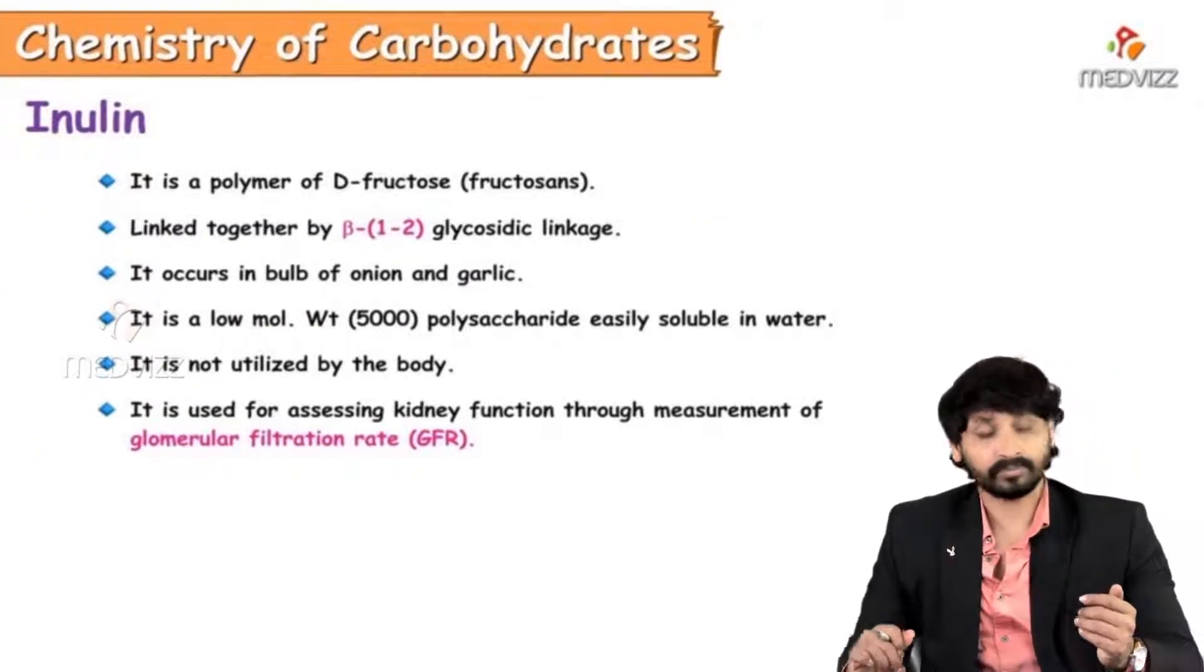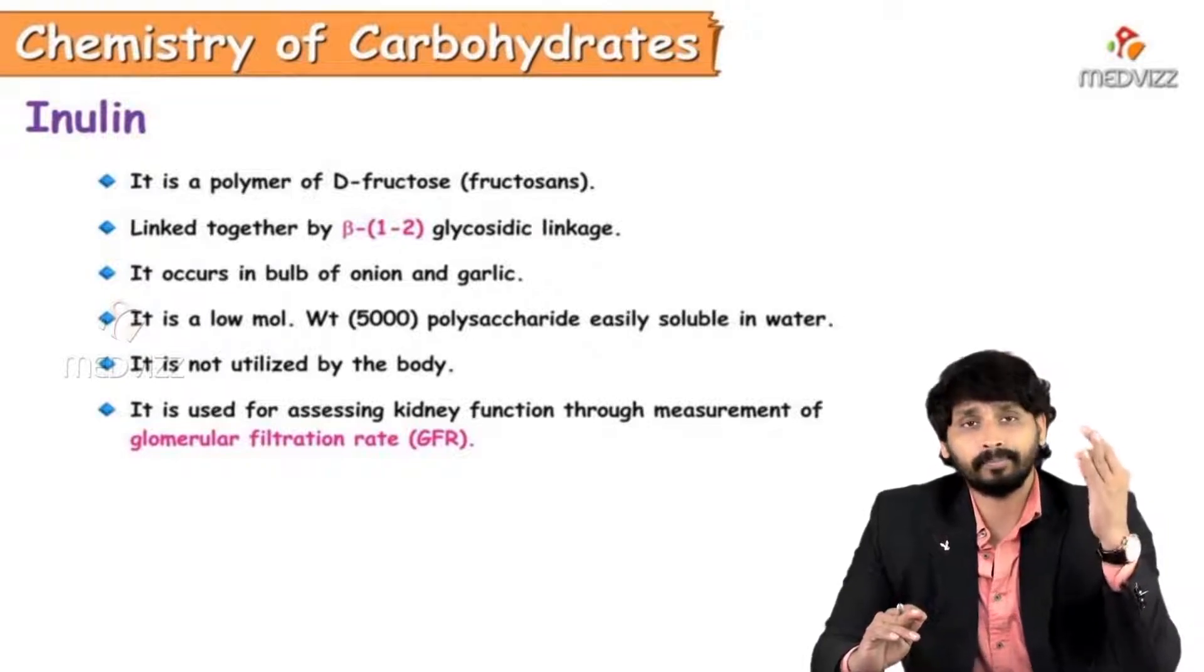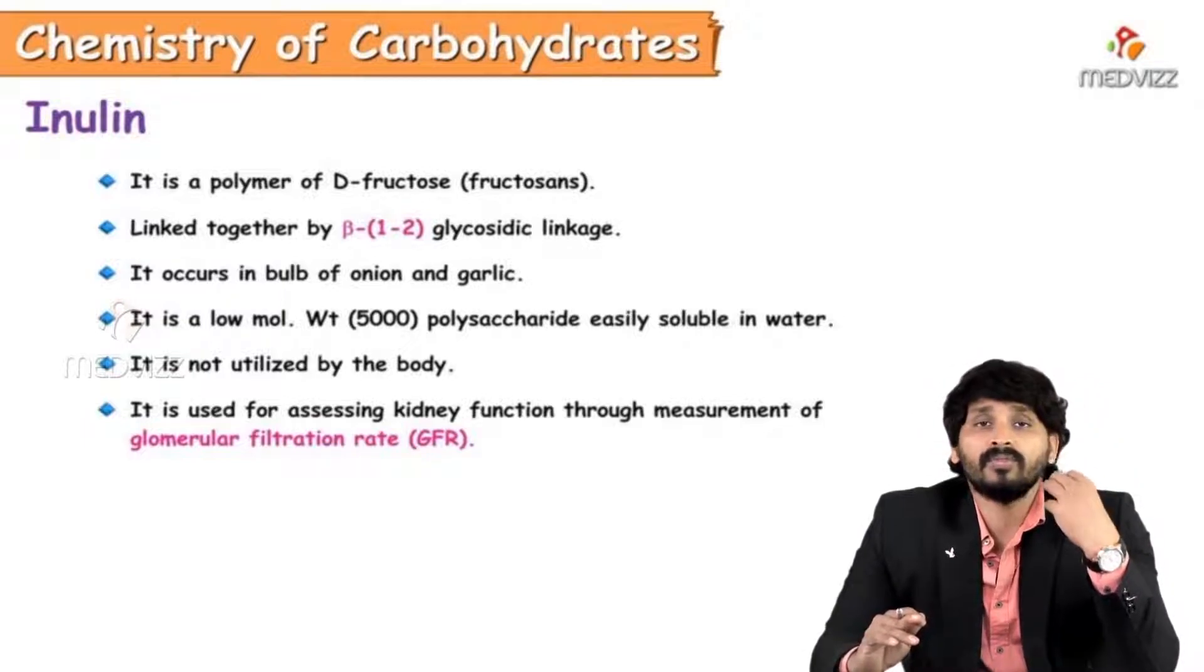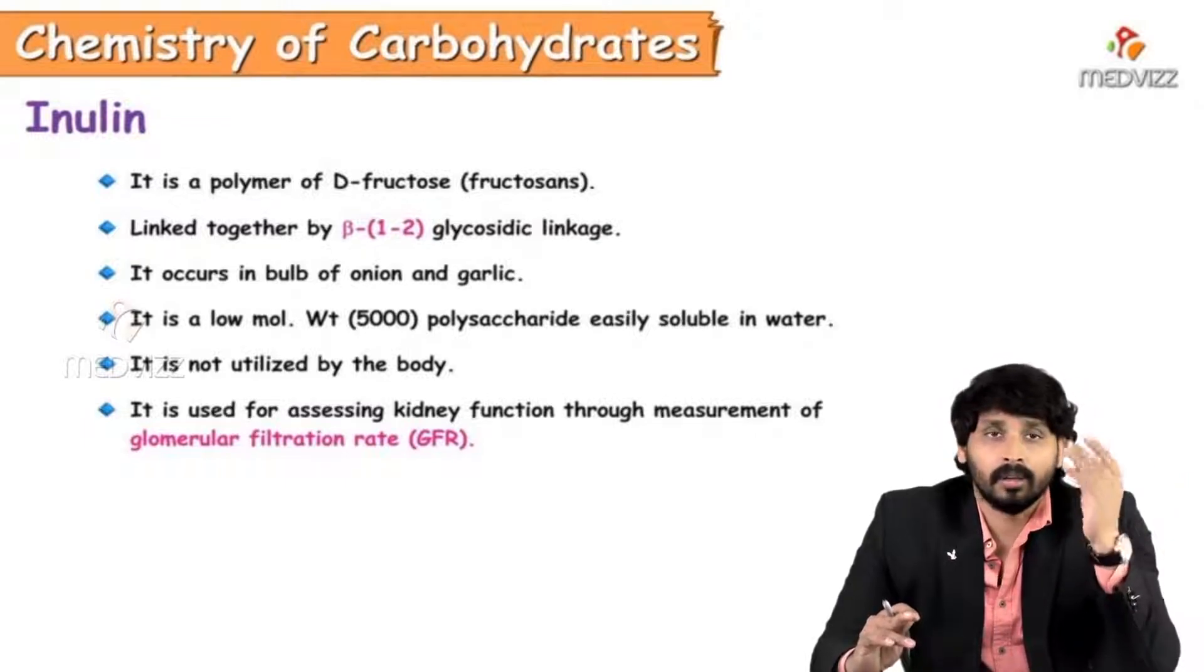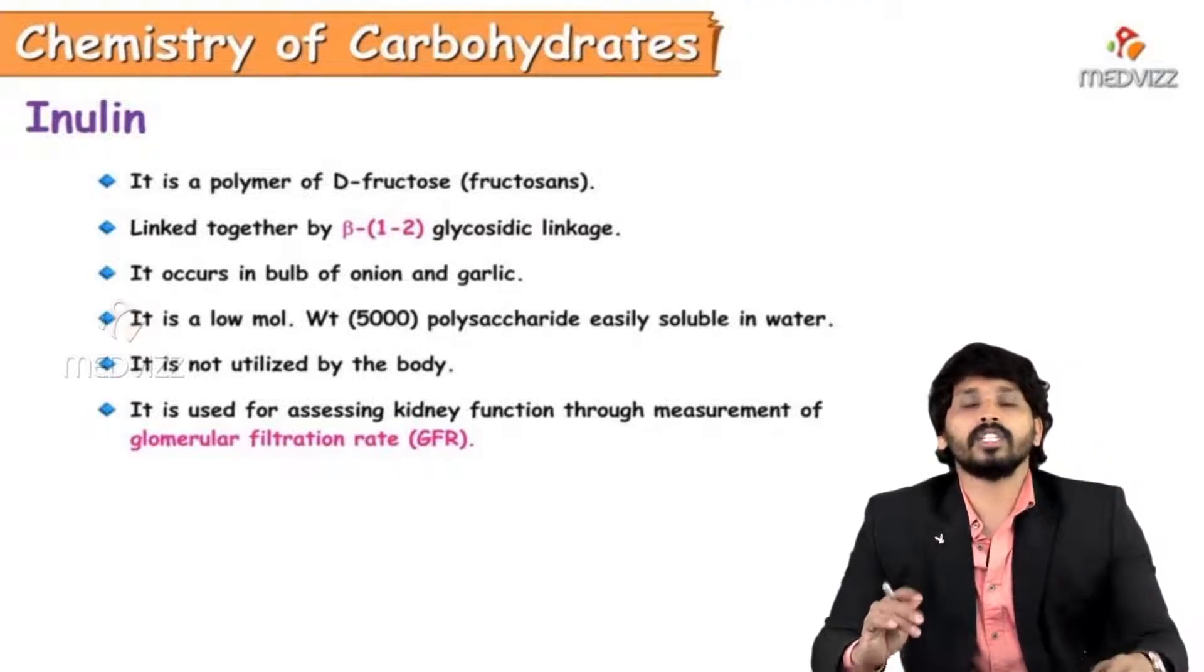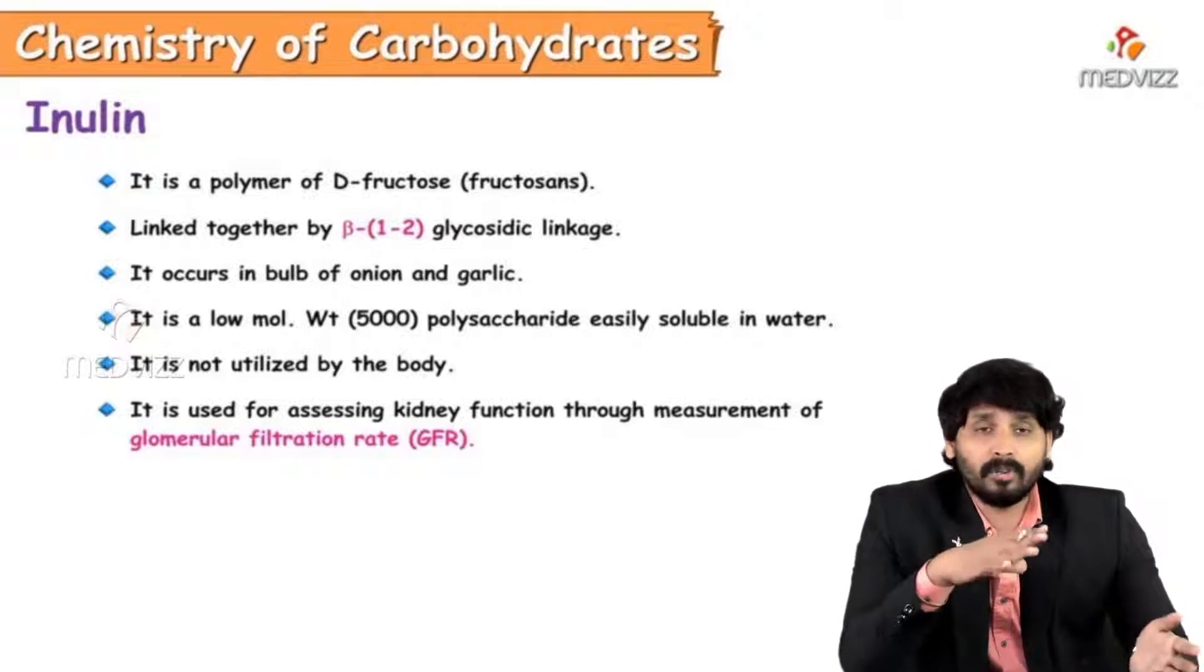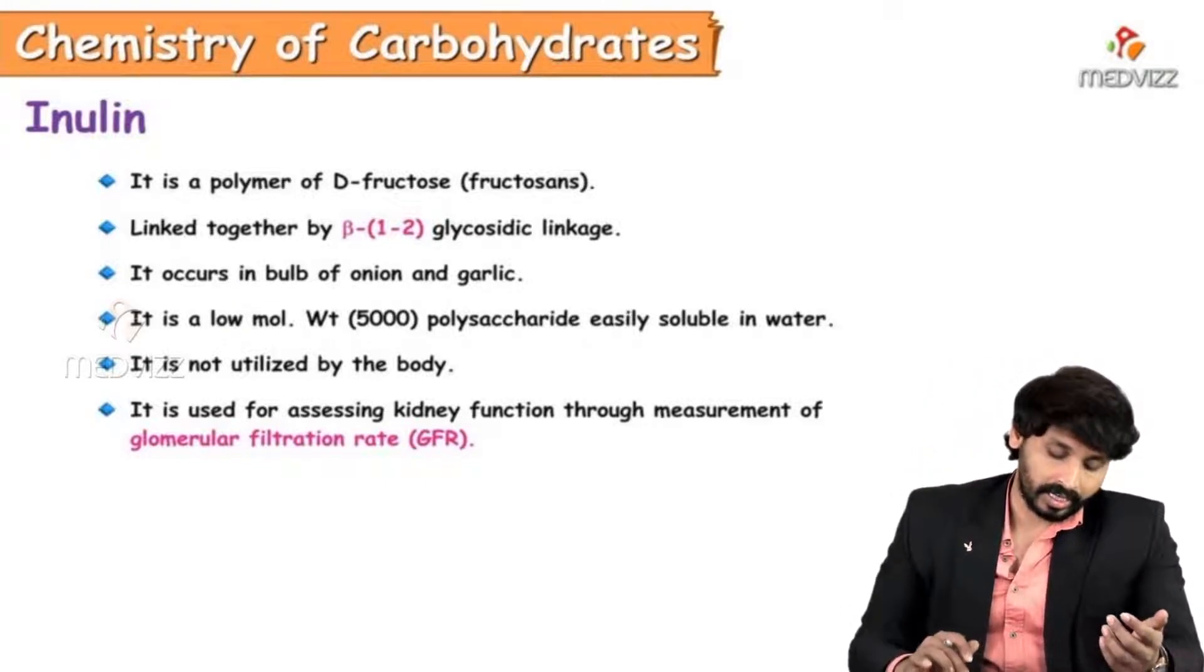The next polysaccharide to be described is inulin. So far we have discussed the polymers of glucose, like starch, glycogen, and cellulose which is a polymer of beta-D glucose. But the main importance of inulin is that it is a polymer of D-fructose. The linkage is beta-1,2 glycosidic linkage. It exists in underground vegetables like bulbs of onions and garlic. It is the lowest molecular weight polysaccharide, which is easily soluble in water. It is not utilized by the body. The importance of inulin is that it is used in assessment of glomerular filtration rate to assess whether your glomerulus is active or healthy. Because it is neither absorbed nor secreted, inulin can be used in assessment of glomerular filtration rate, GFR.